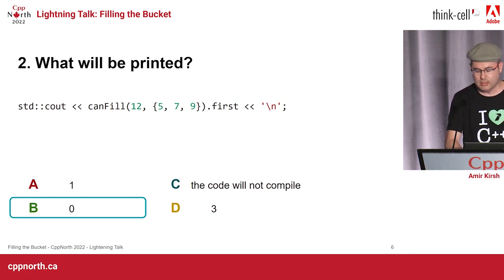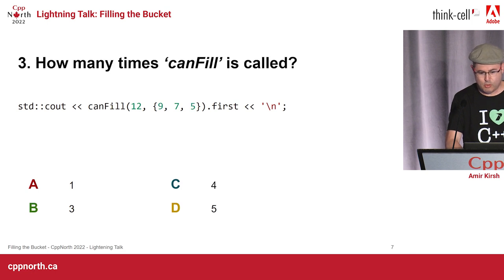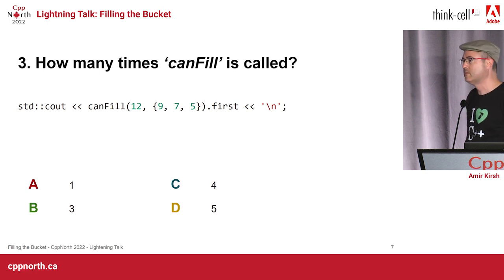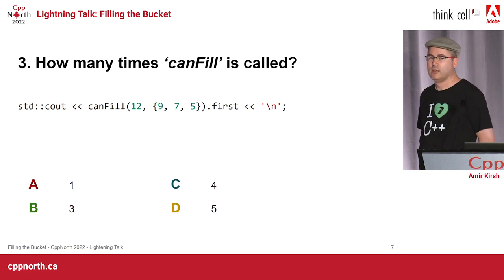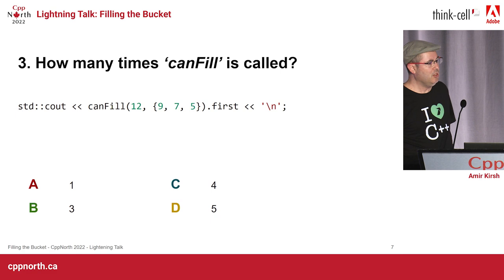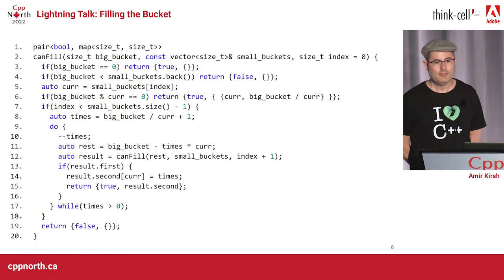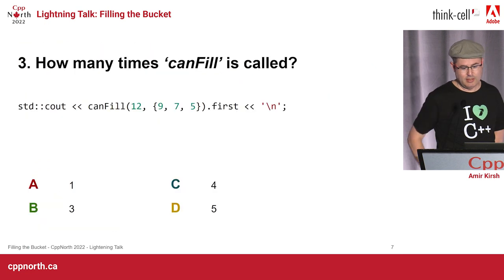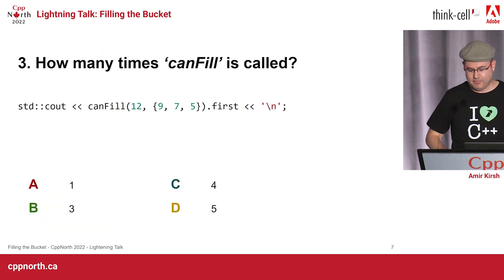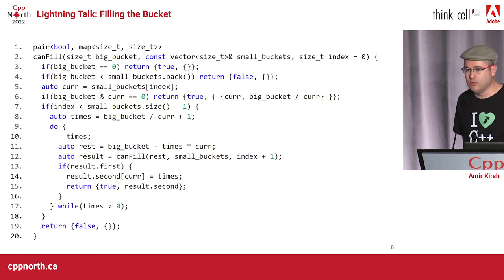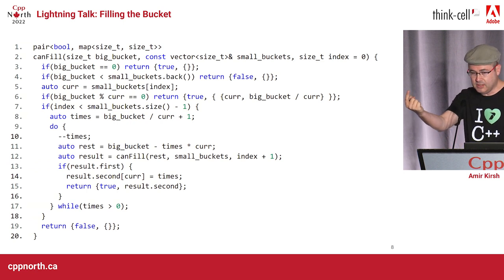Are you ready for the last question? You can still earn points. How many times can_fill is called with this input, which is sorted? Maybe you need to see the code. Okay — buckets: nine, seven, five. These are the small buckets and this is the code. How many times would can_fill be called, including the first call? At least once it is called.